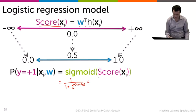Which is the same as saying 1 over 1 plus e to the minus w transpose h of xi.